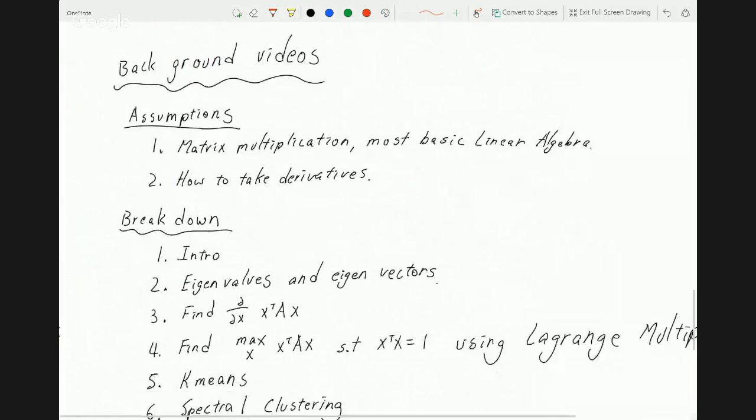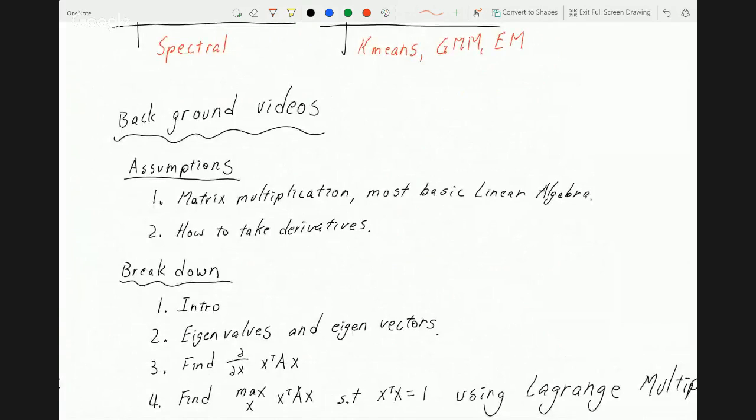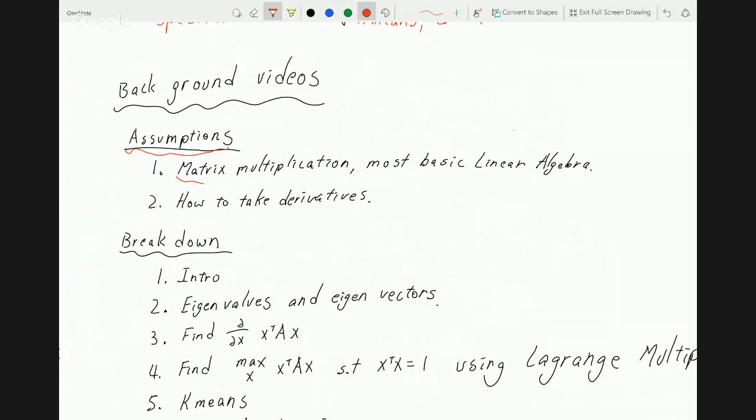So before we go on, I'm going to obviously go over some background, instead of just jumping to spectral clustering. But there are some assumptions that we must make. First, you should know how to do matrix multiplication, like A times B. That's very basic, or just the most basic linear algebra. Like, how do you do A transpose? Or stuff such as A inverse, stuff like that. You should know how to do these things.